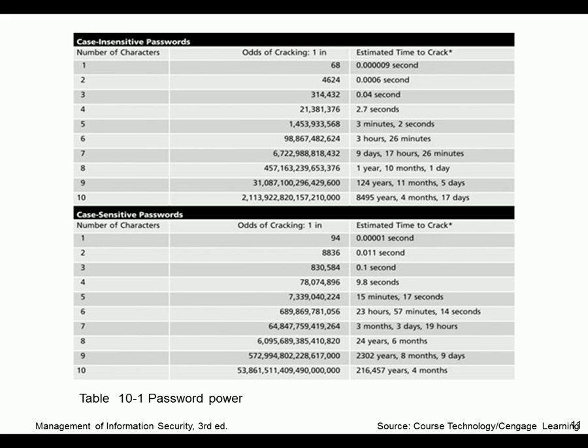Looking at password statistics: with one character, the odds of cracking are 168. If we get up to 10 characters, look at how long it would take — eight thousand years to crack it. Case sensitive, and now we're up to 216,000 years to crack it, unless you have a supercomputer. With 448-bit Blowfish, you're never going to break it — a supercomputer trying billions of brute force attacks per second, and at the bottom of the list there wasn't even a number to describe how many years it would take.